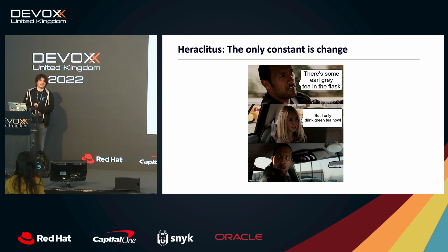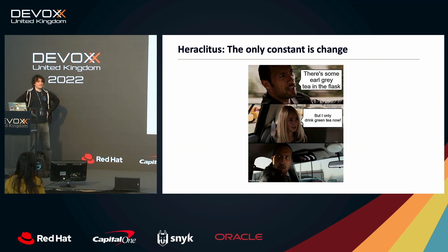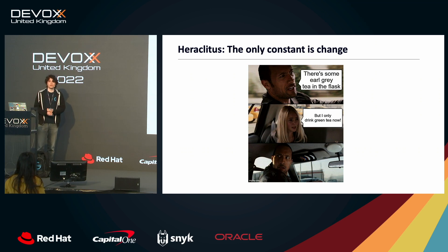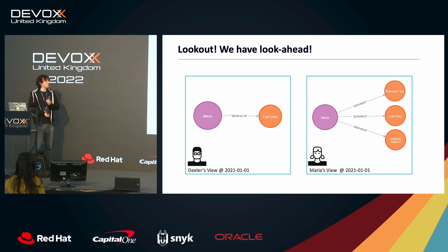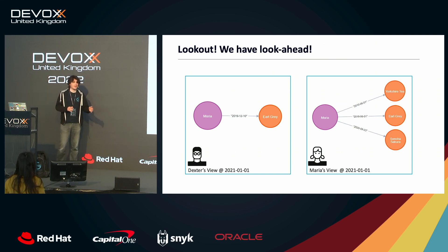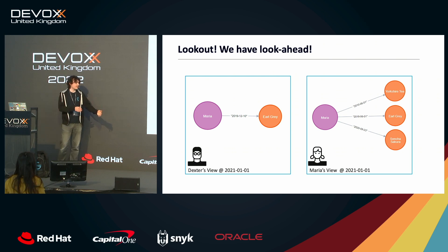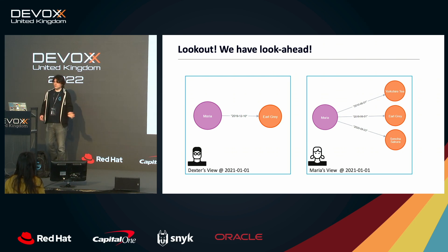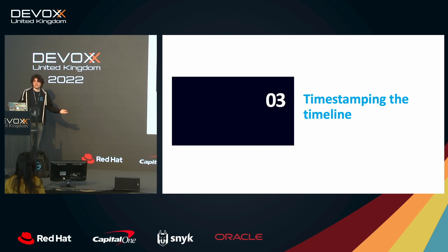If you gave that data to a data scientist they'd probably say you're terrible at gifting — but it wasn't that I was bad at gifting, it was that she changed preferences and I didn't know. The data scientist gets an incorrect insight because we've lost the information that I only learned about her past preference after the relevant time. This is what we call look-ahead, and it's a really important problem in quantitative finance: if you can see the future you get incorrect insights, and your model may perform terribly on real dirty or outdated data.